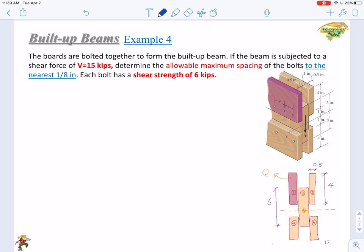Example four is another design problem to find out a maximum spacing, allowable maximum spacing based on the given conditions. Here in this example we have five boards bolted together to form a build-up beam. If the beam is subjected to a shear force of 15 kips, then determine the maximum spacing allowable of the bolts to the nearest 1/8th inch. Each bolt has a shear strength of 6 kips.